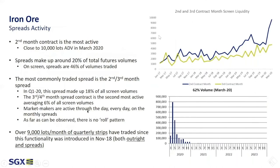Now let's talk about spread activity. The second month on SGX, which is the blue line here, is the most active month. If we're looking at the spread, the total spread accounts for 20% of our total futures volume, and on-screen, around 50% of the volumes is actually spread activity. The most actively traded spreads are second to third month at 18% of on-screen activity, followed by third to fourth month at around 6% of all on-screen activity. At the bottom of the screen you can see the chart showing the breakdown of liquidity throughout the curve.